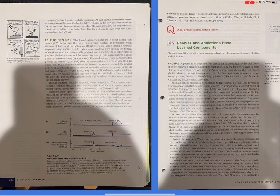The role of dopamine. What biological mechanisms are in effect during such learning? To investigate the brain mechanisms involved in prediction error, Wolfram Schultz and his colleagues examined how dopamine neurons respond during conditioning. In their studies, monkeys were initially left thirsty. When those monkeys unexpectedly received fruit juice, unconditioned stimuli, they experienced a positive prediction error. And the reward regions in the brain showed a great deal of dopamine activity, Figure 6.17a.